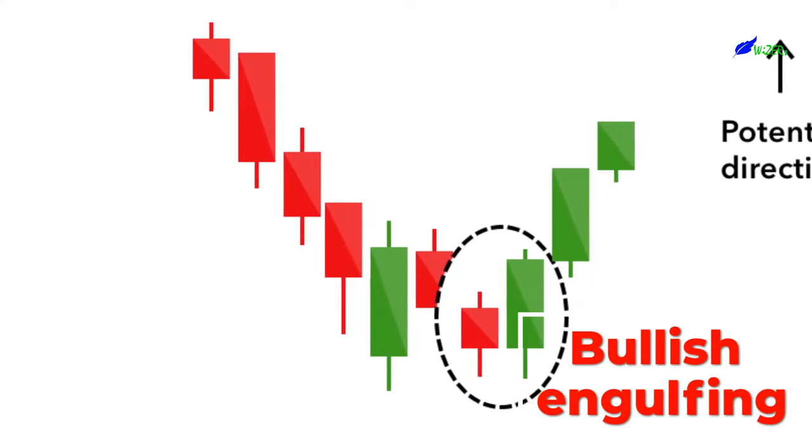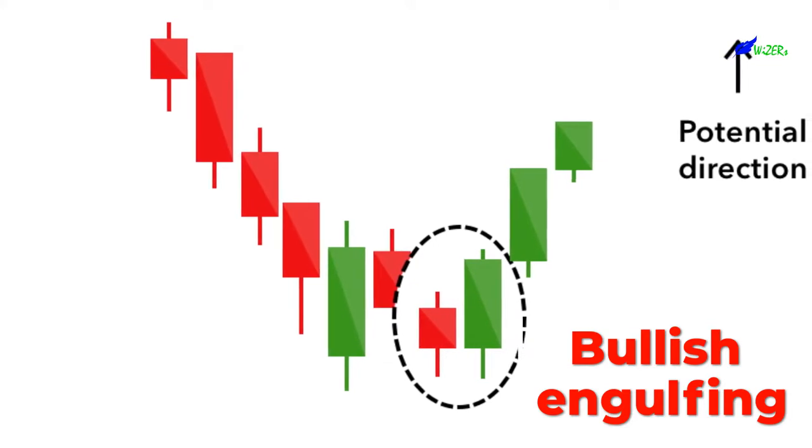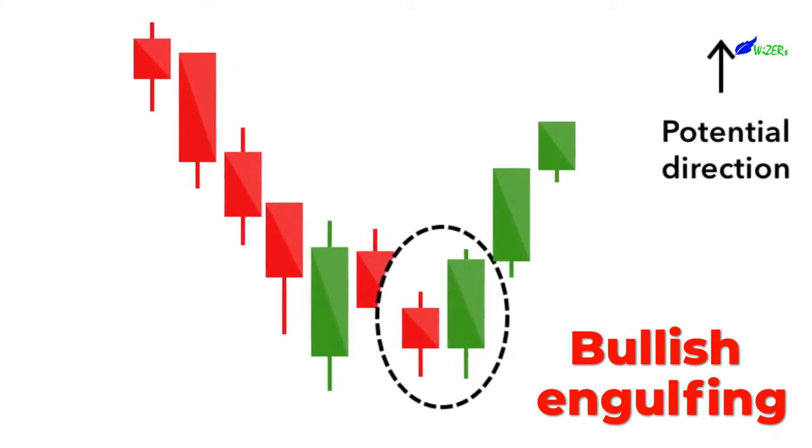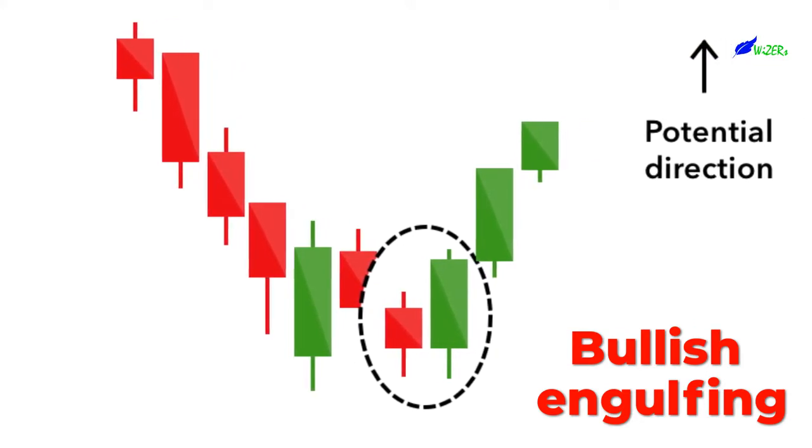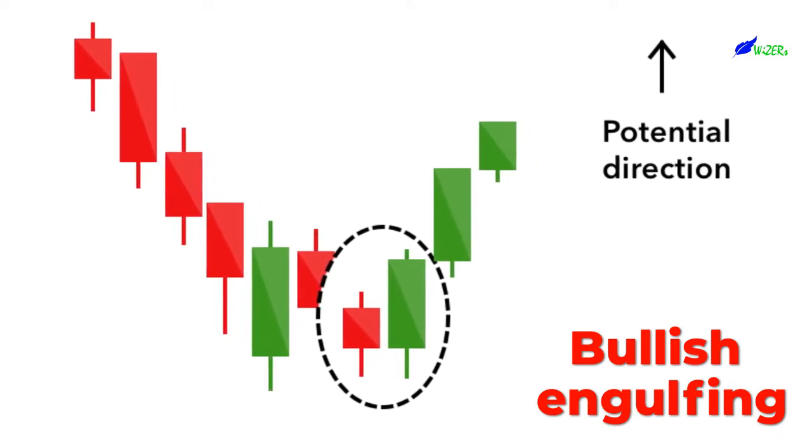The bullish engulfing pattern is formed of two candlesticks. The first candle is a short red body that is completely engulfed by a larger green candle. Though the second day opens lower than the first, the bullish market pushes the price up, culminating in an obvious win for buyers.